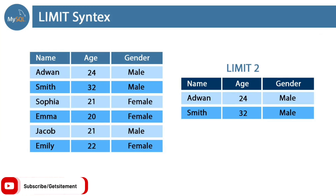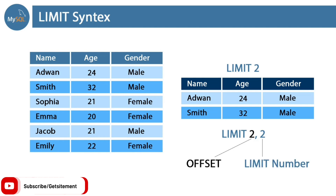From this table we can extract our first two students. But if I want to see the other two students — Sophia and Emma — and skip the first two students, then what? To extract this kind of result, we need to use another optional keyword with the LIMIT clause, which is OFFSET. Here you can see a number in black — this is our offset. Offset works as a starting number, meaning where to start. Here our offset is 2, meaning it starts from Sophia because it's going to skip two students: add1 and Smith. Let's see the syntax of offset and how we can use it with the SELECT command.